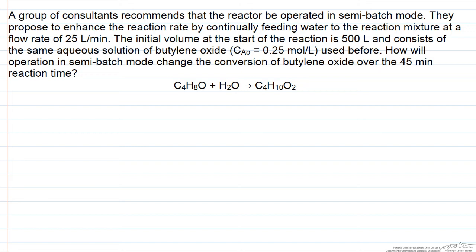Another group of consultants shows up and recommends that we change the operation to operate in semi-batch mode. They propose to enhance the reaction rate by feeding the water at a flow rate of 25 liters per minute. The initial volume is 500 liters. The initial concentration is the same as it was in our original problem statement, the same concentration of A to start with. But then at time equals 0, we're going to start this flow rate of the other reactant water.